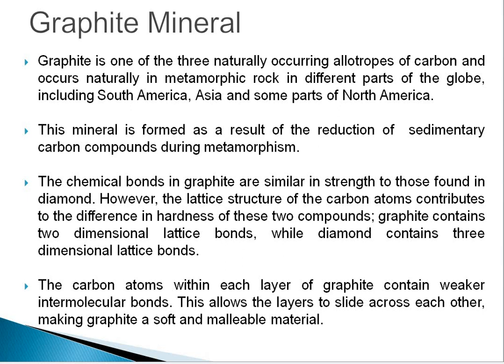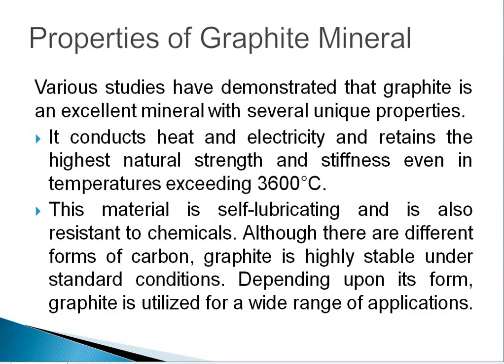Graphite contains two-dimensional lattice bonds while diamond contains three-dimensional lattice bonds. The carbon atoms within each layer of graphite contain weaker intermolecular bonds. This allows the layers to slide across each other, making graphite a soft and malleable material. Next is the properties of graphite. Various studies have demonstrated that graphite is an excellent material with several unique properties. The first property is that it conducts heat and electricity and retains the highest natural strength and stiffness even at high temperatures exceeding 3600 degrees Celsius.